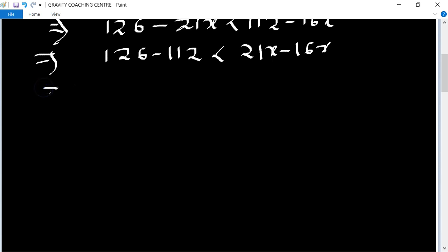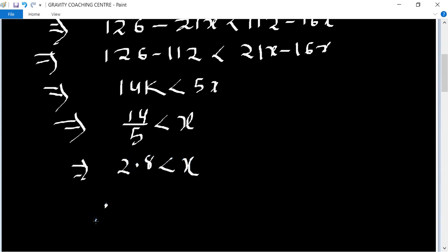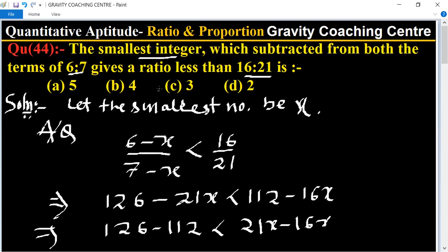This gives us 14 less than 5x, so 14 upon 5 less than x, which implies 2.8 less than x. Therefore x equals 3. So answer C is the right answer.